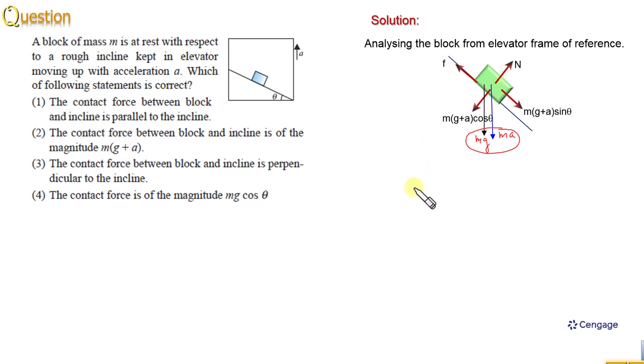Here we can write f equal to mg plus A sin theta. This is the equation for equilibrium of the block parallel to the inclined surface. And normal reaction from free body diagram, we can write N equal to mg plus A cos theta. This is the normal reaction.